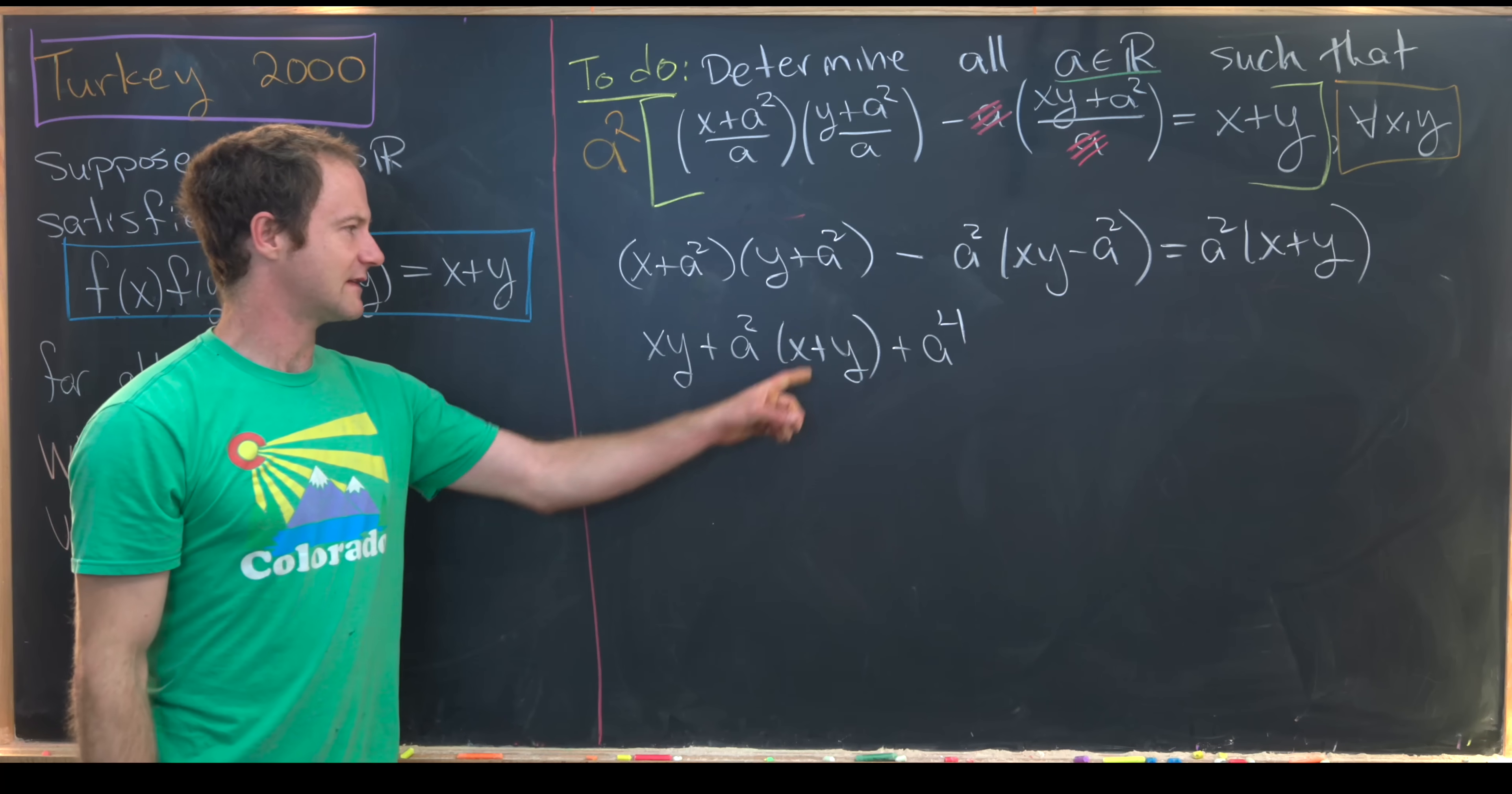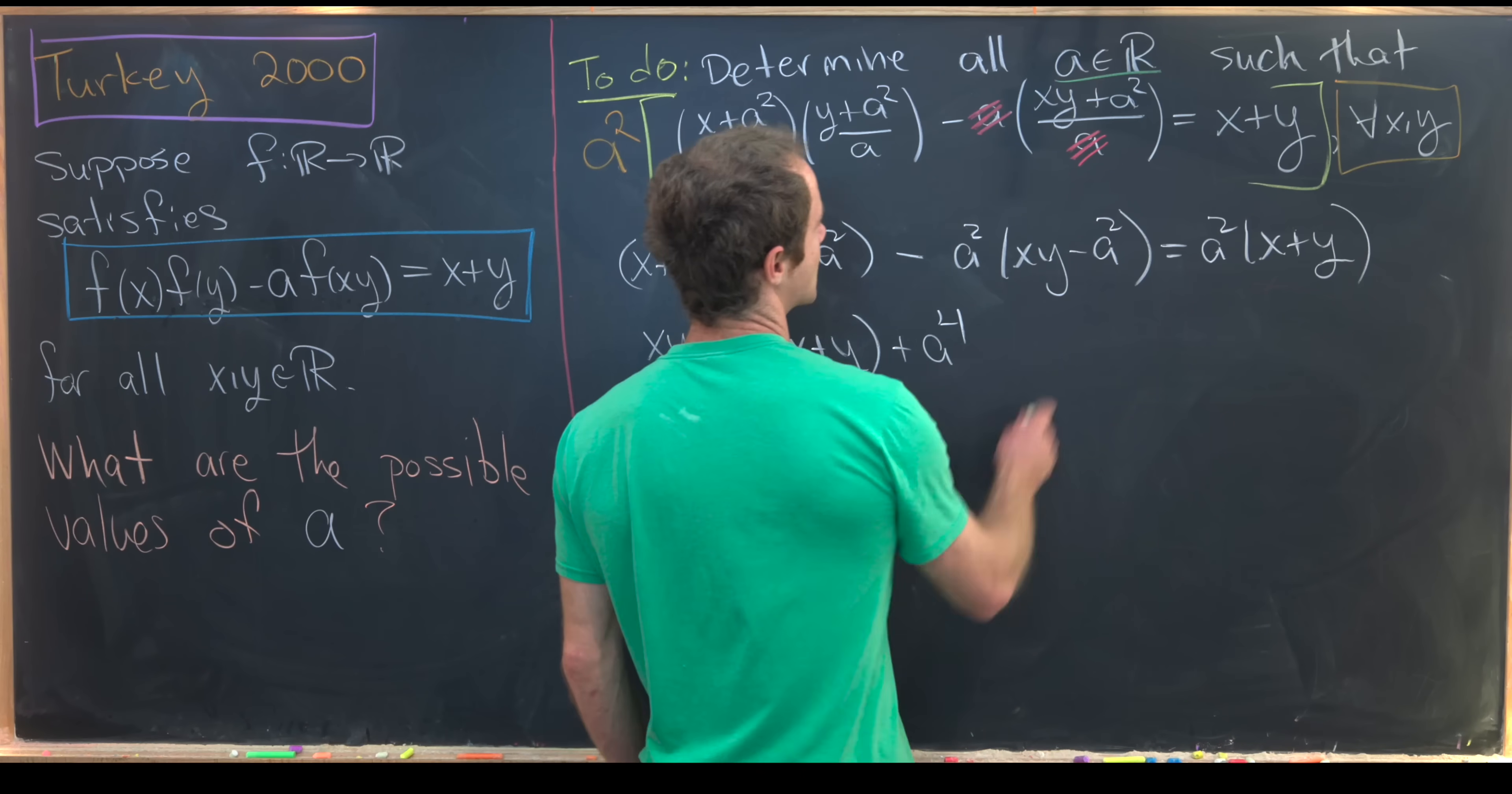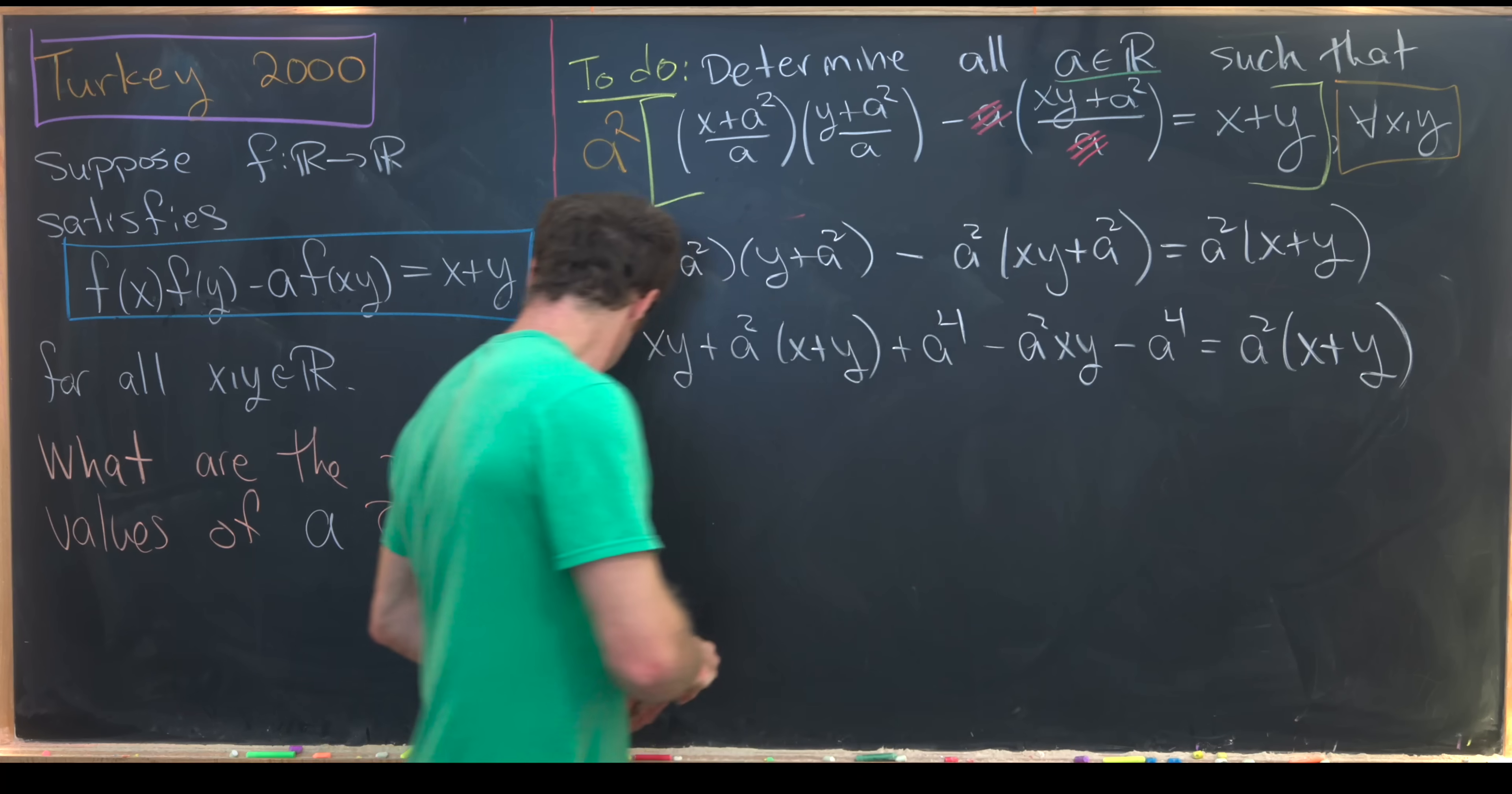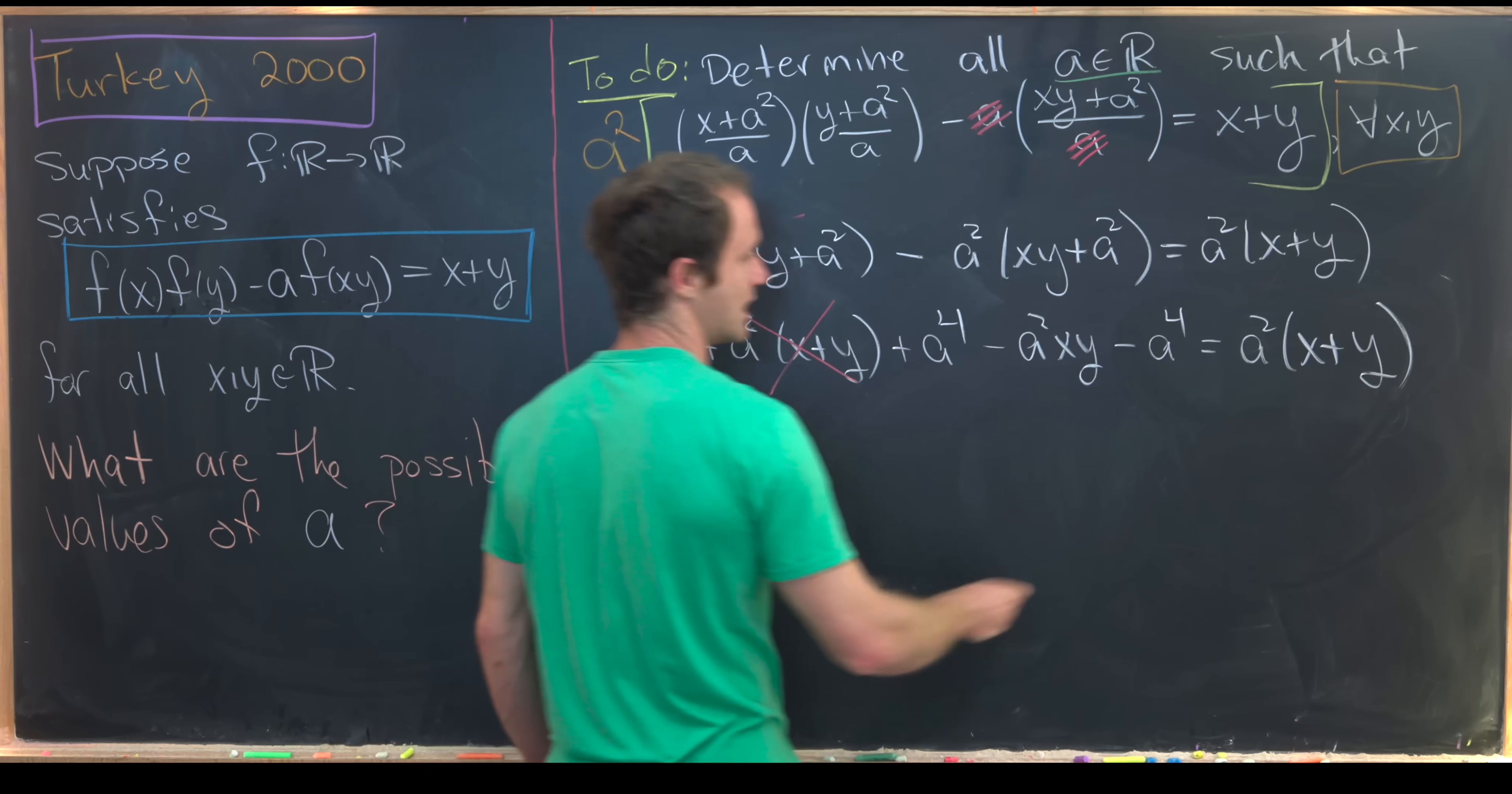You might say, why did I leave it as a^2 times (x+y) instead of multiplying it out? Well, that's because I have a term like that over there on the right hand side. So that's going to give us some nice simplification. So from here, we have minus a^2 times xy minus a^4 equals a^2 times (x+y). So now let's start simplifying this situation. So this a^2(x+y) will cancel with the one that's on the other side of the equation. Furthermore, we have this a^4 will cancel with this negative a^4.